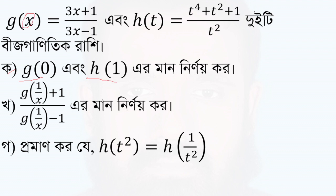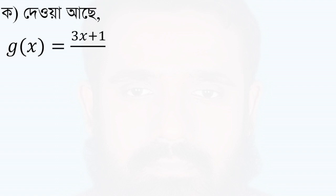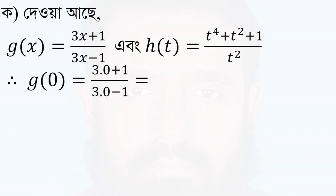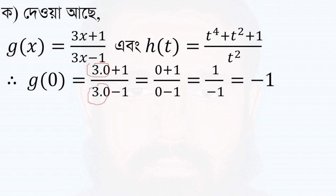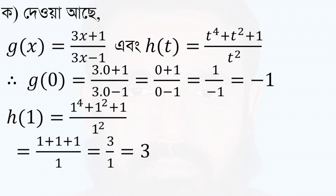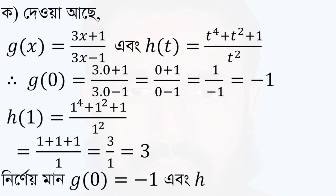If we substitute 0 into g(x), we get g(0). For s(t), substituting t=1: 1 to the power 4 is 1, 1 squared is 1, so we get 1 plus 1 plus 1 divided by 1, which gives 3. So g(0) is equal to minus 1, and s(1) is equal to 3.